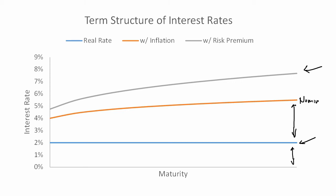The orange line here would be our nominal term structure of interest rates. So if we were to actually look at the bond, the dollar amount of the coupon would be based off the nominal rate. But that nominal rate is composed of two components: one is the real rate, and the other is based off inflation expectations. So if a bond were riskless — meaning the return was known with certainty — the term structure of interest rates would be this orange line.